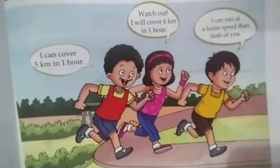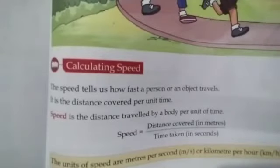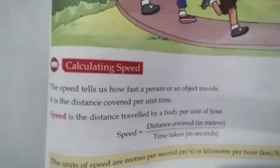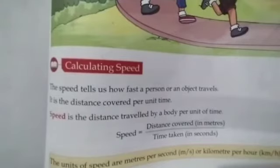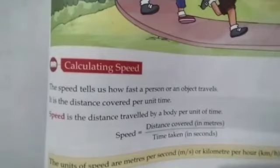The distance covered per unit time — per hour, per minute, or per second — is the speed. Speed is equal to distance covered in meters upon time taken in seconds. Otherwise, distance covered in kilometers upon time taken in hours. Kilometer per hour or meter per second are the speed units.